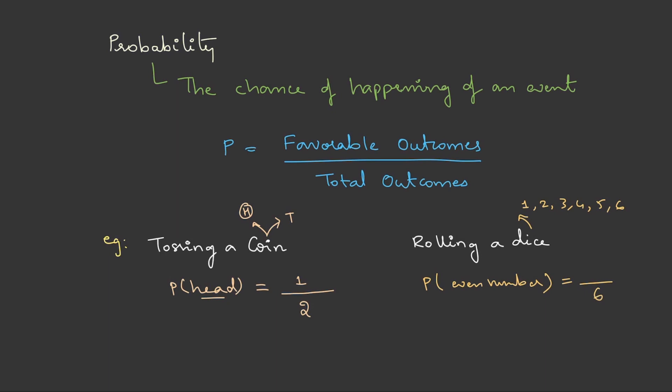Now, in that they are saying to calculate even numbers. So two is even, four and six. So three possible outcomes. These three will be the favorable outcomes. Therefore, the probability is one by two.